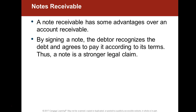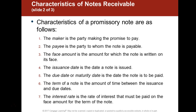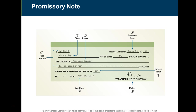Note receivables are generally longer term — sometimes 90 days, sometimes over a year. They have a legal claim because you are talking about a written, signed agreement to pay back a certain amount of money over a certain period of time. Accounts receivable, by contrast, is generally not a written document — it's a trade between you and your client, short term, and a promise to pay. A sample promissory note shows key components: the date, signature, and other required elements.